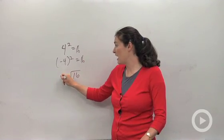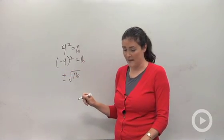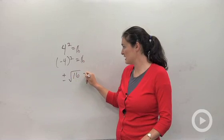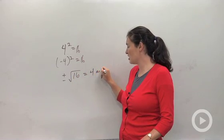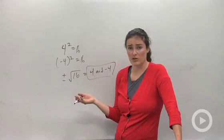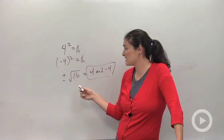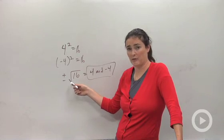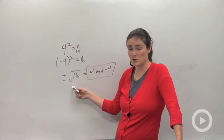But be careful, you're going to have a positive and a negative answer. The square root of 16 is equal to 4 and also negative 4. So when you're doing problems like this and you're taking the square root of both sides in order to solve for x, be really careful that you account for both positive and negative square roots.